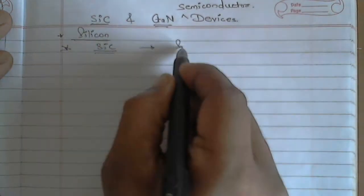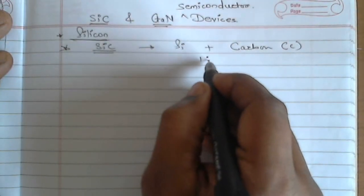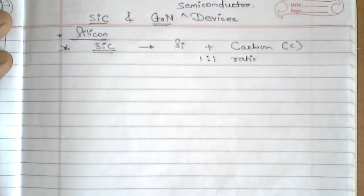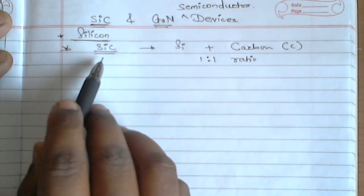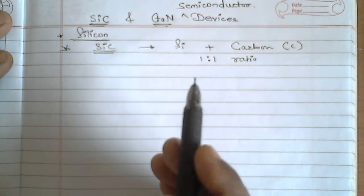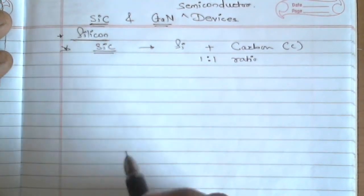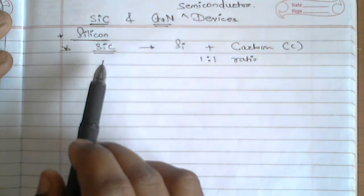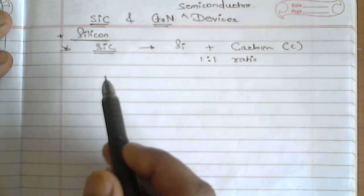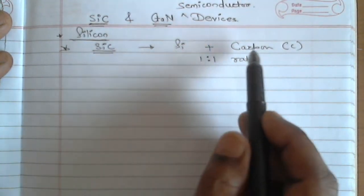SiC is a compound of silicon and carbon, mixed in a one-to-one ratio. SiC is a semiconductor material, and similarly GaN is a material. By using SiC you can form transistors, diodes, MOSFETs, and so on. Similarly, a transistor generally has three layers — NPN — and all those layers are of silicon, so instead we can use this material to increase its performance. These are materials, so the introduction here is about the material itself, not detailed device structures.